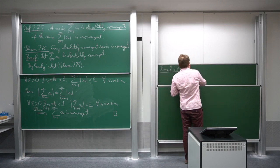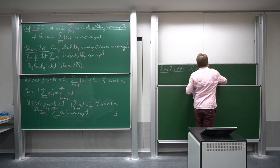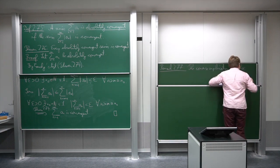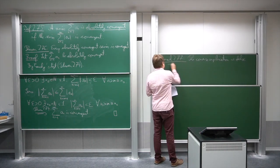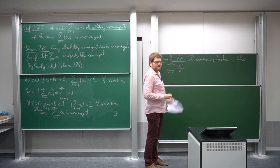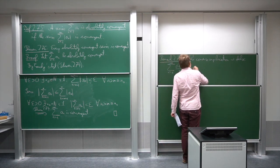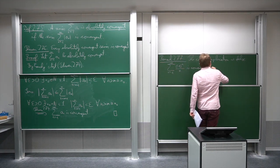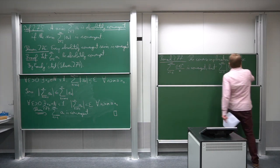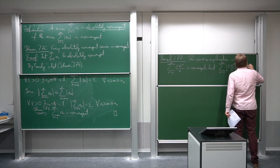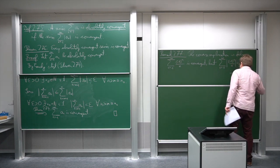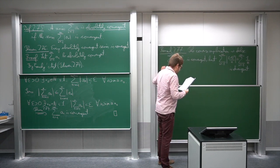The converse implication is false. From convergence we cannot derive absolute convergence. The example we've already seen is the alternating harmonic series: sum of minus 1 to the power of n over n. We derived from the Leibniz test that this is convergent, but the series of absolute values is simply the harmonic series, which we've seen is divergent. So the series is convergent but does not converge absolutely. You have to be careful — the other implication simply doesn't work.